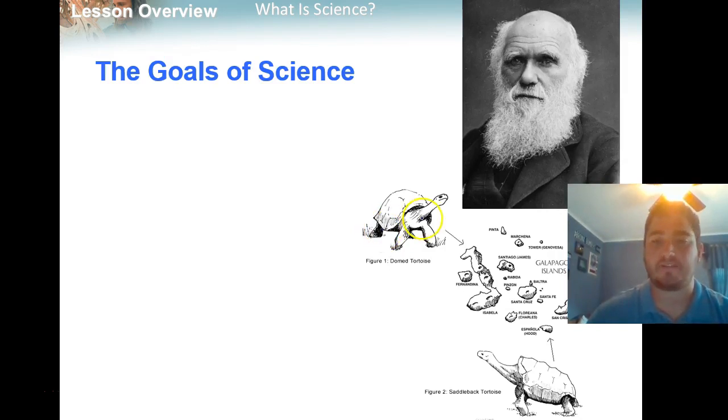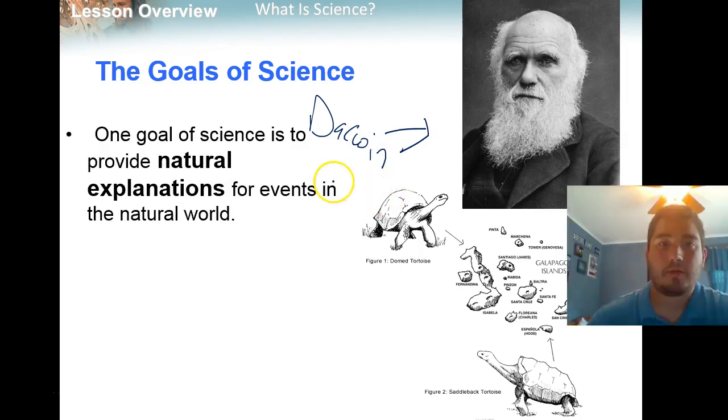The goals of science. To talk about the goals of science, we're going to use another historical scientist. Hopefully you know him, and this is Charles Darwin. Yes, he is famous for the theory of evolution. The first goal of science is that science is used to provide natural explanations for events in the natural world. Science is not going to provide explanations for things that are unnatural. It provides explanations for things that happen in our world.